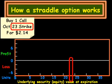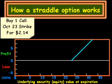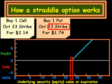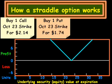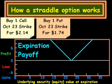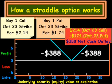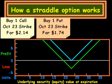Our upside from the call looks like this. And the payoff of the put — we are buying one put at the $23 strike price — looks like that. Now, that's our expiration payoff. Of course, we have this $388 net cash outlay that we have to subtract from the expiration payoff. We go ahead and subtract that, and we get our profit/loss diagram for our particular straddle option.